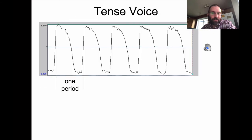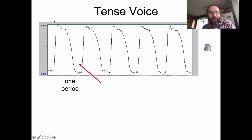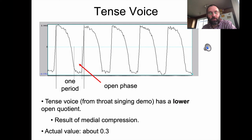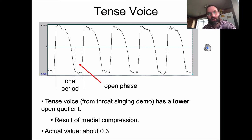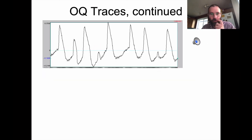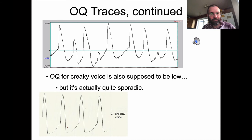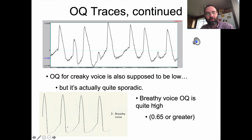For tense voice, where you're pushing the vocal folds together more tightly, less of the glottal pulse cycle is spent in the open phase, giving a lower open quotient — I calculated about 0.3, or 30% of the cycle being open. So more medial compression means a lower open quotient; less medial compression means a higher open quotient. For breathy voice, the open quotient is about 0.65 or greater — roughly 65% of the time the vocal folds are actually open rather than closed.